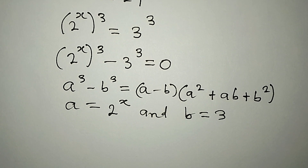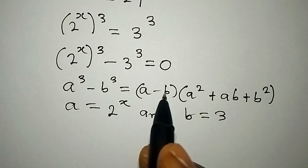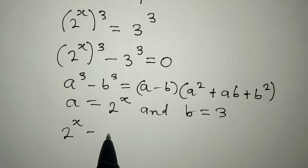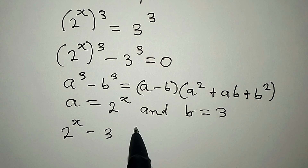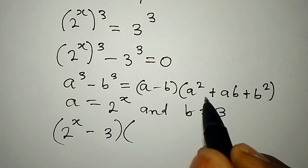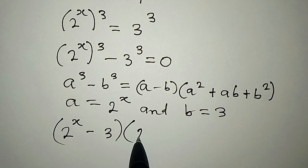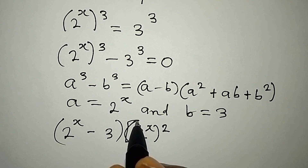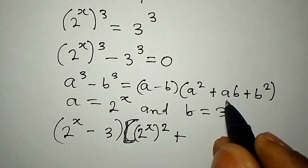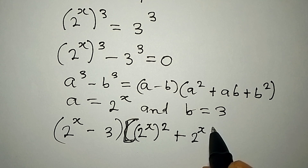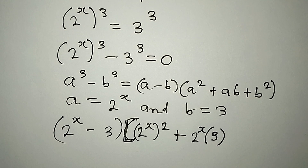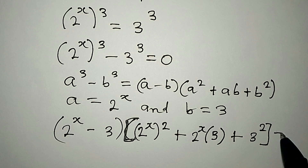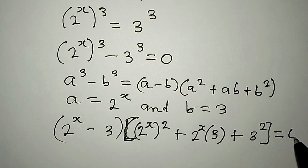Now let's put all of this into the standard form, so that a minus b becomes 2 to the power of x minus 3, in the first bracket. In the second bracket, we have a squared, which will be 2 to the power of x to the power of 2, then plus ab, that would be 2 to the power of x multiplied by b, and b is 3. Then plus b squared, that would be 3 to the power of 2. And everything here is equal to 0.